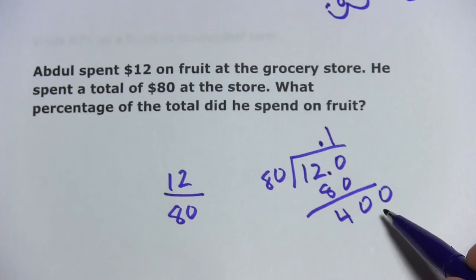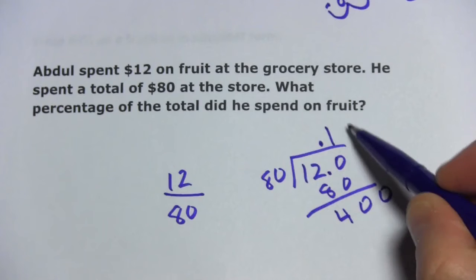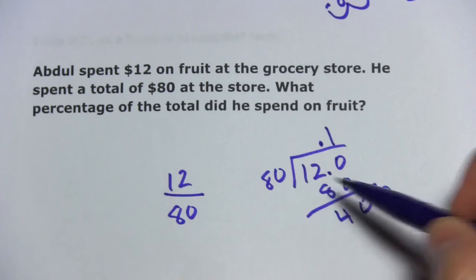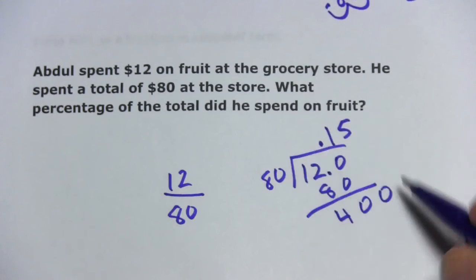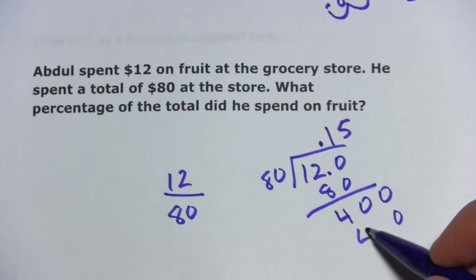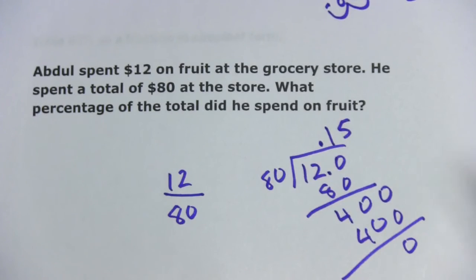And then I'm going to put another zero here. And now we're on this column. And let's see, five times eight is 40. So if I put a five here, I get five times zero. And then five times eight is 40. And that comes out to nothing. And we're done.